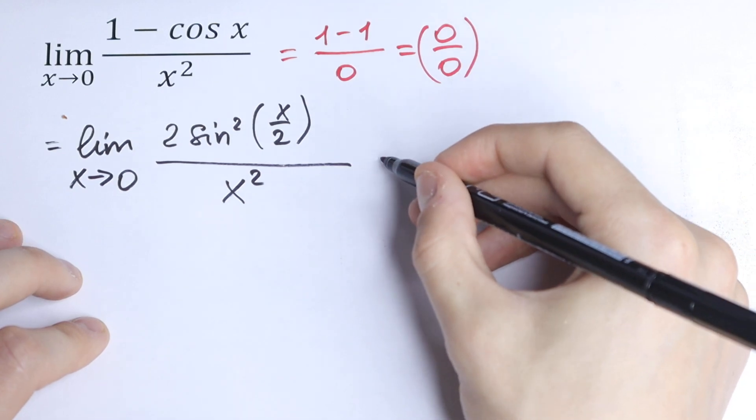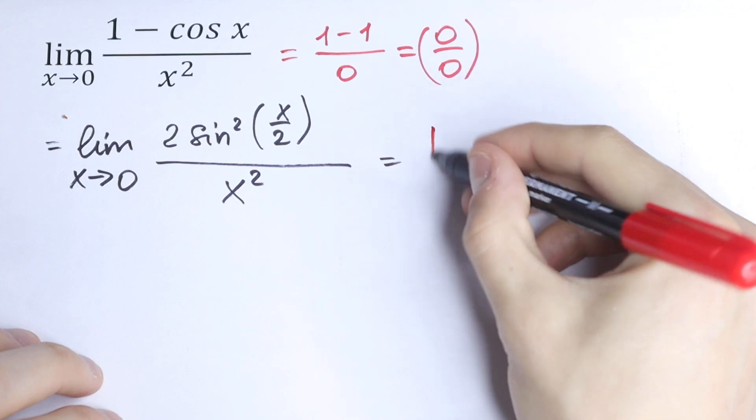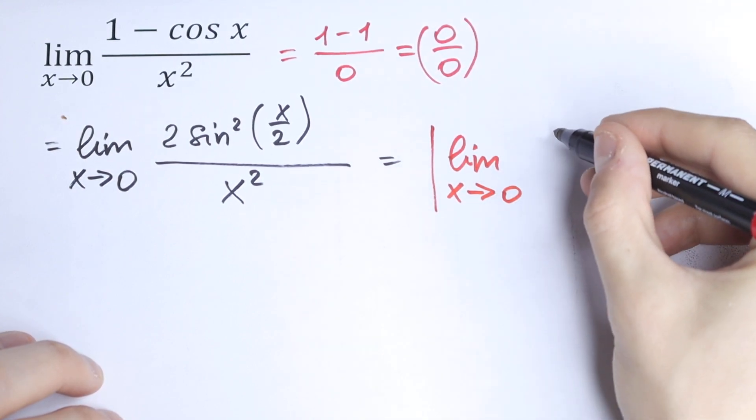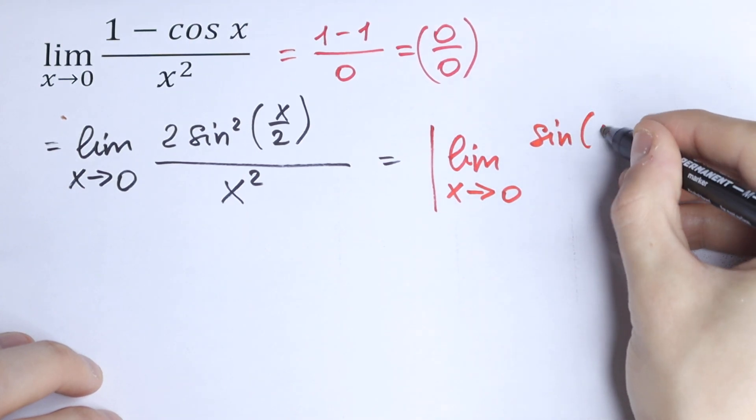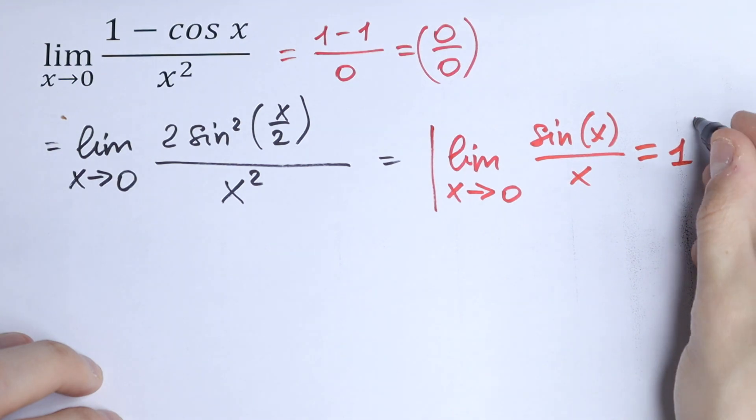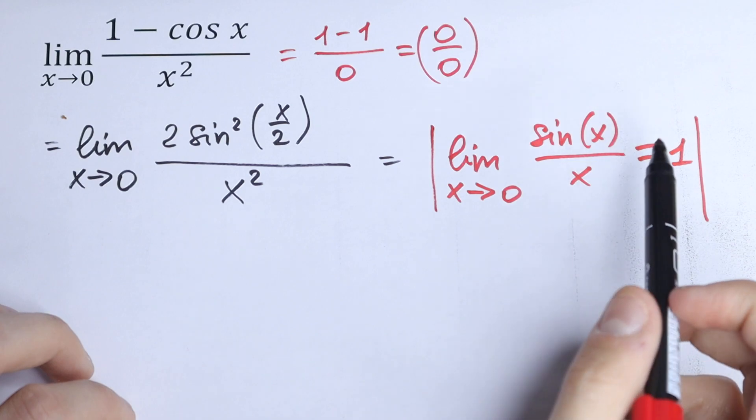We all know that the limit as x approaches 0 of sin(x)/x is equal to 1. This is a standard limit we all know, but take a look right here.